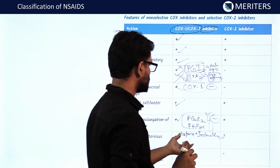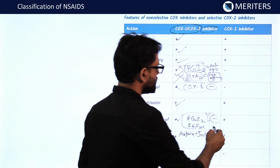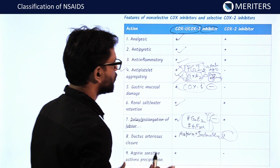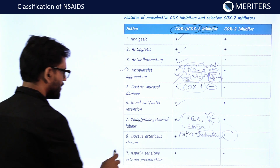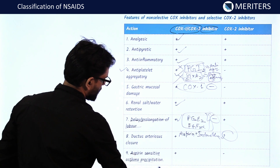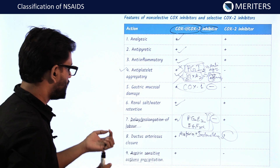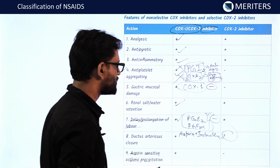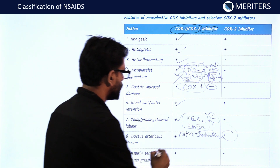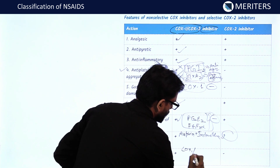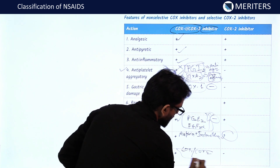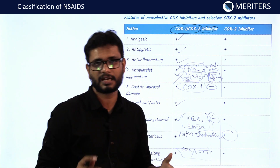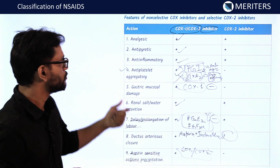The combination of COX-1 plus COX-2 inhibitors is used for ductus arteriosus closure; no known use has been confirmed yet for COX-2 inhibitors alone for this. Aspirin-sensitive asthma precipitation is another concern — aspirin given to asthmatic patients can precipitate asthma. Therefore, non-selective drugs like aspirin should not be given to patients with asthma.